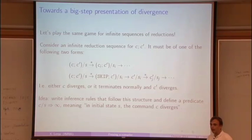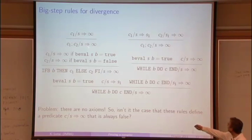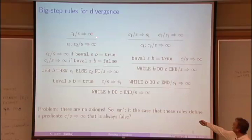Let's write big step rules for that. If c1 diverges, so goes to infinity, then c1 followed by c2 diverges. And if c1 terminates in s1, but then c2 starting in s1 goes to infinity, then the sequence c1 c2 also goes to infinity. And we can write rules for if also. Basically an if will diverge if the condition is true and the then branch diverges, or if the condition is false and the else branch diverges.